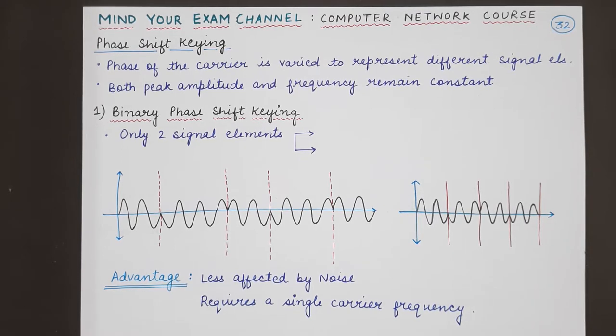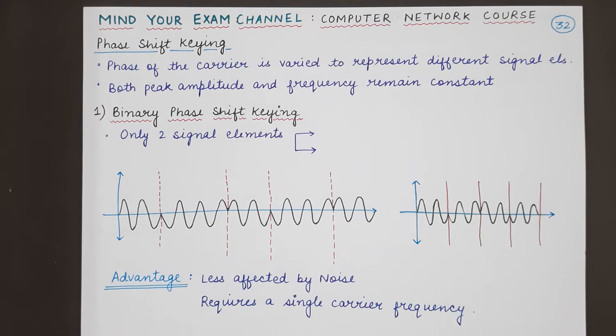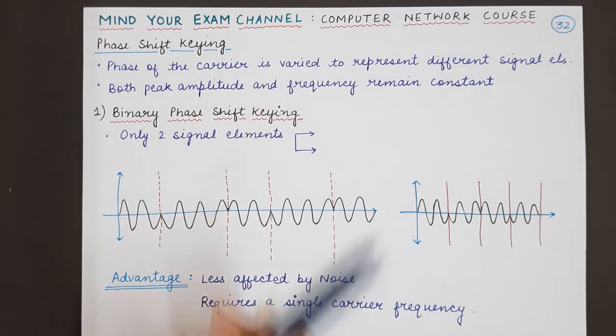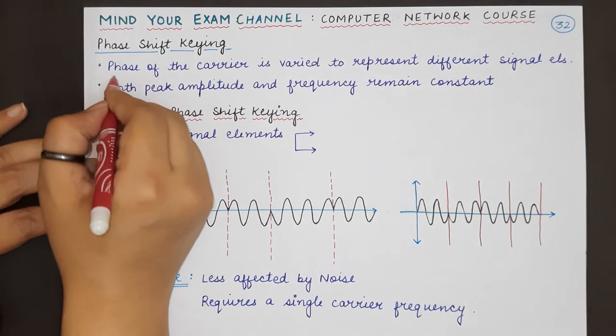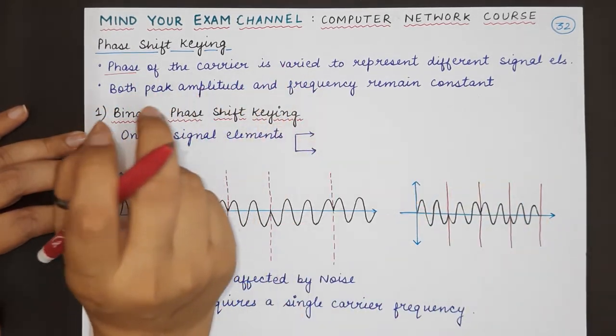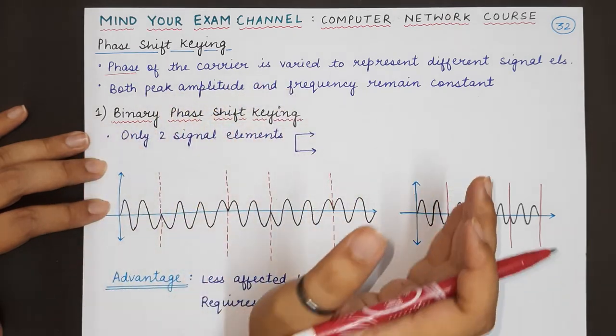This is the phase shift keying or PSK technique in which we are basically modulating or changing the phase of the original carrier signal. In this case, the phase of the carrier signal is changed depending upon the digital information that has to be transmitted.